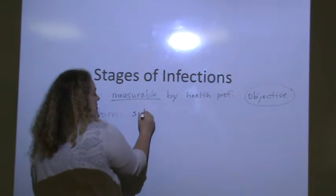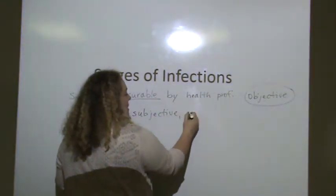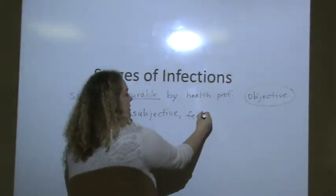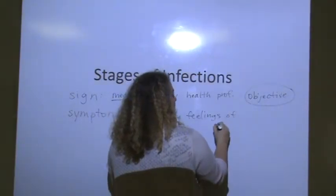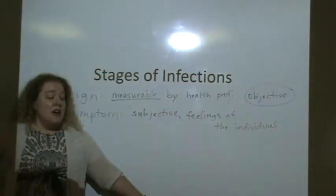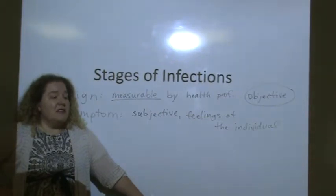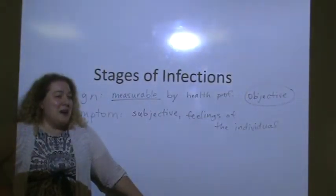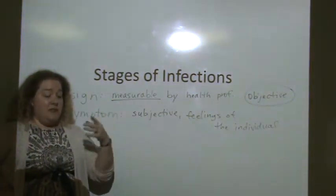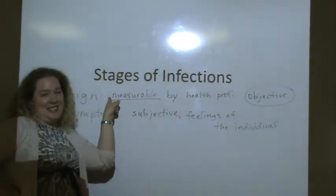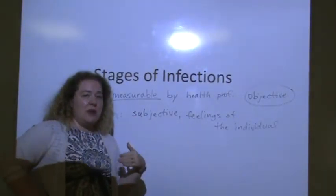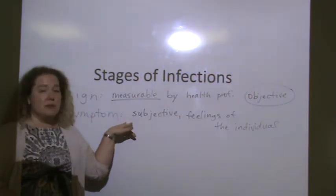Symptoms are subjective. They are subjective feelings of the individual that has the problem. So an example of this is if you come up to me and you say, Dr. Ong, I feel really nauseated. How do I know if you're lying? You might be lying. If you are pale and I can see it, that's a sign. If you suddenly puke right in front of me, I can see it and that's a sign. But if you just say that you're nauseated or if you say that something hurts, like you have a lot of pain, that's a subjective thing to you, that's a symptom that you report.